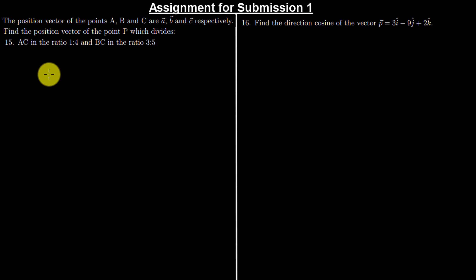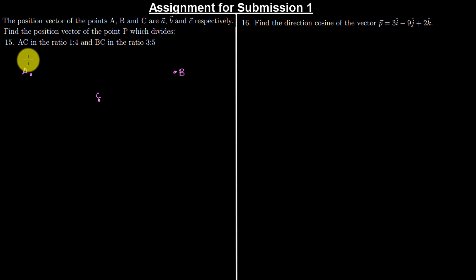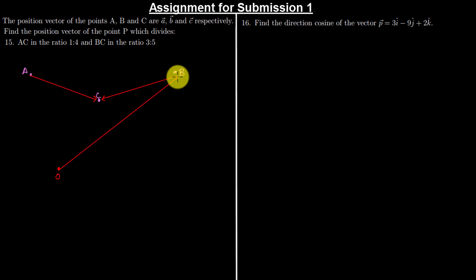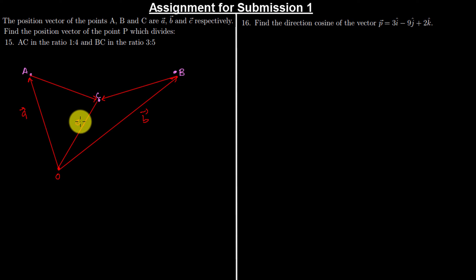So let's say we have point A here, point B here, and point C here. We are looking at line AC and line BC — AC going in this direction and BC also going in this direction. My origin is somewhere here. I connect this to get vector B, vector A, and vector C. If I divide AC in ratio 1 to 4, let me say this is my position vector R1.